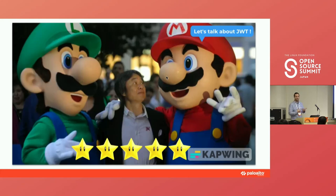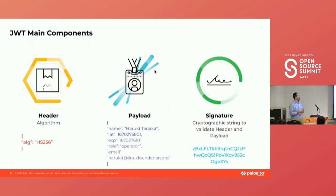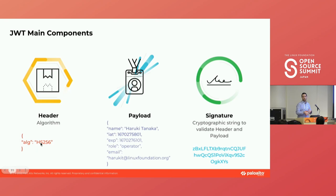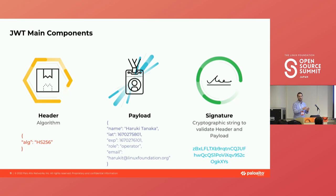Let's talk about the main components of a JWT token. First, we have the header, where you define the validation algorithm. To keep it simple, I chose HMAC with SHA-256 — we'll see the differences between this and others later. The payload is actually the meat of it — what we want to manipulate as an attacker, or what the developer wants to protect as a defender.